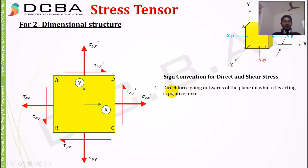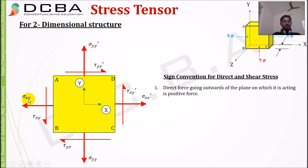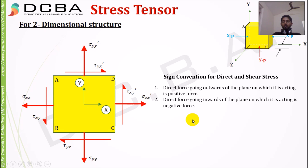There are two types of stresses: direct stress and shear stress. For direct stress — sigma_xx, sigma_yy dash, sigma_xx dash, sigma_yy dash — a direct force going outwards from the plane on which it is acting is positive. So sigma_xx acting on face AB and going outwards is positive; any force going outwards is positive. A direct force going inwards on the plane on which it is acting is negative.